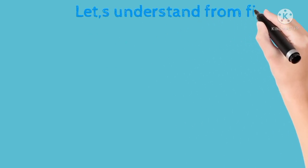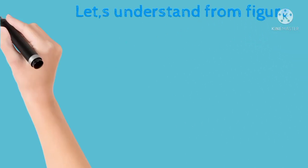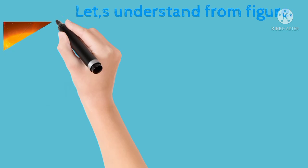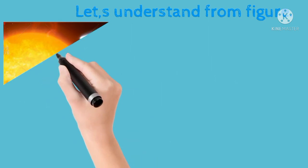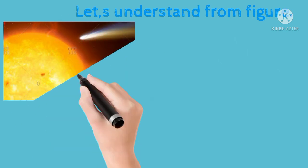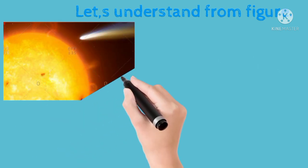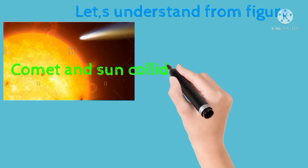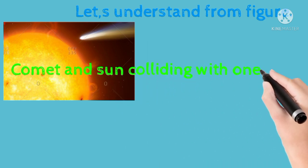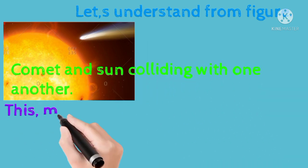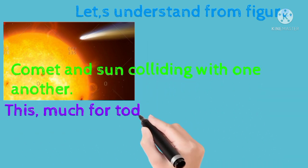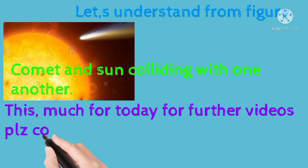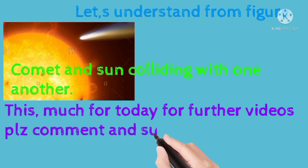From the figure, it is shown that the sun and the comet collide with each other and produce a large amount of matter, which changed into other planets and the Earth.